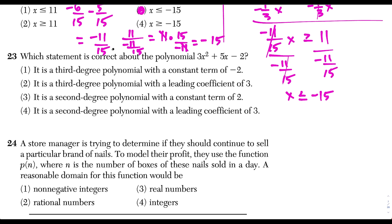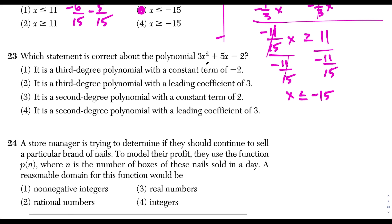Question 23: which statement is correct about this polynomial? The degree of a polynomial is the highest power that appears — here it's 2, so this is a second degree polynomial. Choices 1 and 2 are out for calling it third degree, confusing that with the leading coefficient of 3. The constant term is negative 2, not positive 2, so choice 3 is out. Choice 4 is correct: a second degree polynomial with a leading coefficient of 3.